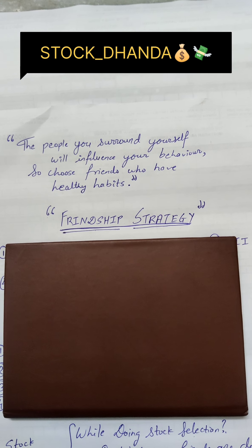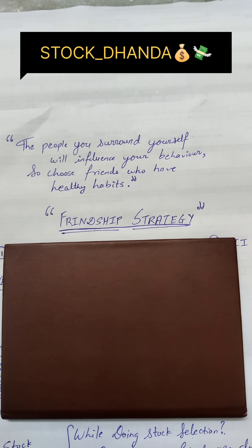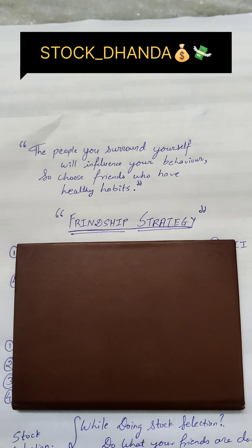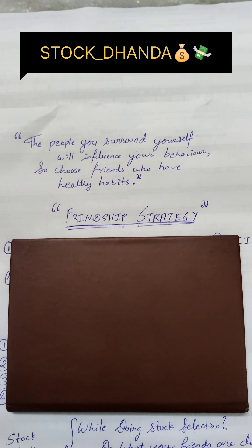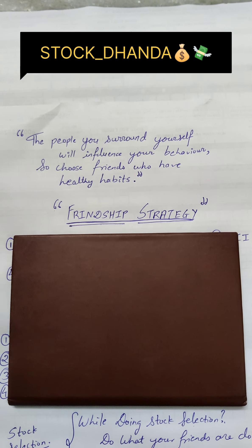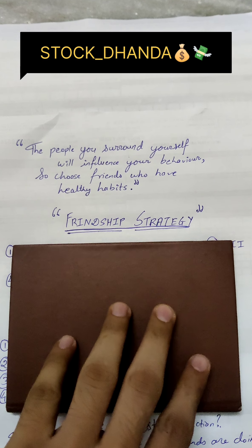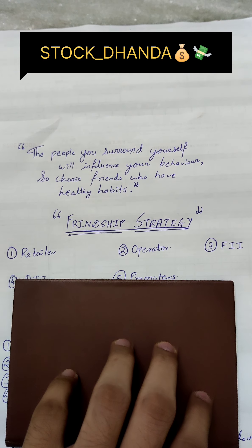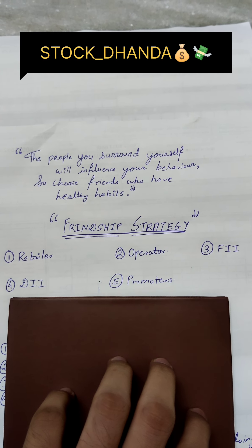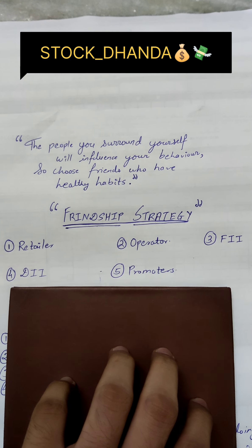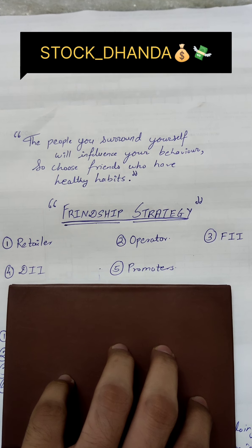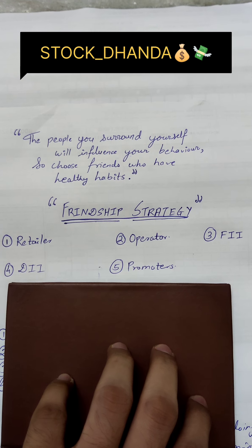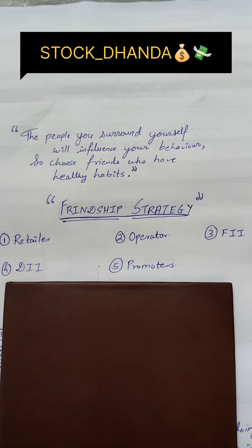In the friendship strategy, we have to make a team of four. But market mein humare paas only paach options hain — retailer, operator, FII, DII, and promoters.